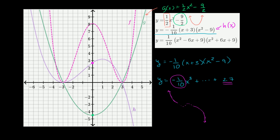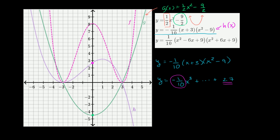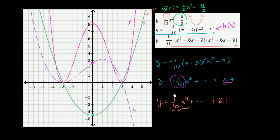Now let's look at the third expression. Obviously we could deduce there's only one equation and one function left, so this must be f of x — but let's reason it out. The highest degree term is 1 tenth times x squared times x squared, giving us 1 tenth x to the fourth. The lowest degree term is 9 times 9 times 1 tenth, which is 81 over 10, or 8.1. This is an even degree polynomial with a positive leading coefficient, so it has end behavior like x squared — positive on both ends.